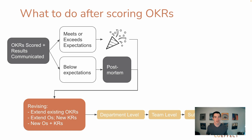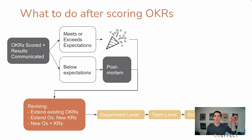The final option is to start from scratch, writing new objectives and new key results. As you go through this revising process, keep in mind that you want to start at the highest level that makes sense — if it's the team-wide level, start there, then go to departments, then teams, then sub-teams. You want to set those highest-level, organization-wide objectives and key results first, so that everybody below knows how to align their objectives and key results with those org-wide ones.